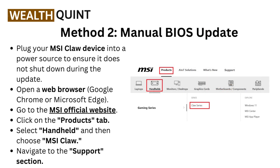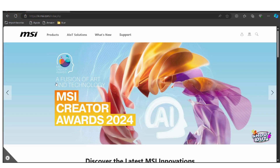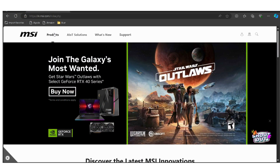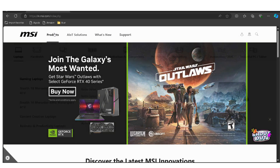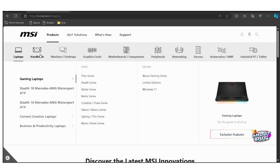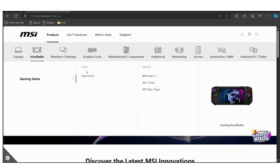Moving to Method 2: Manual BIOS Update. Plug your MSI CLAW device into a power source to ensure it does not shut down during the update. Open a web browser such as Google Chrome or Microsoft Edge. Go to the MSI official website — check the link below in the description, you can directly go through it.